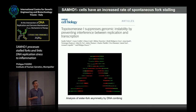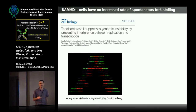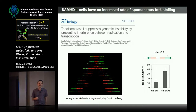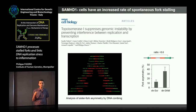We also used an assay where we looked at the distance covered by sister replication forks as an indication of spontaneous replication fork stalling, and we found that the fraction of sister forks showing more than a 60% difference was actually increased in SAMHD1-depleted cells, indicating that not only are the forks slower, but they also stall more frequently under normal growth conditions.